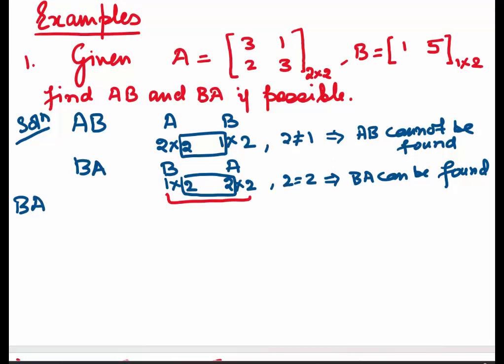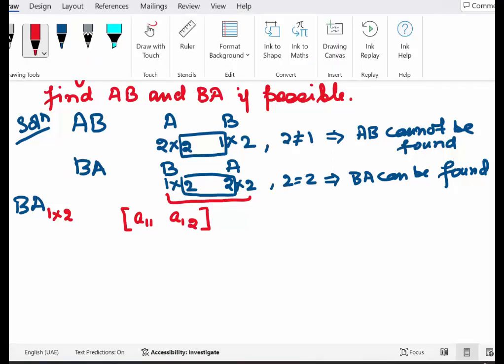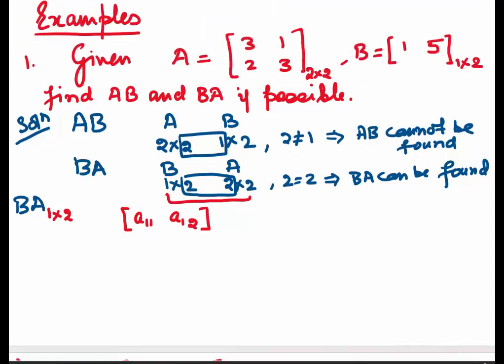As I had told earlier, the outside numbers give us the order. So BA will have order 1 by 2 — 1 row and 2 columns. A matrix with 1 row and 2 columns will have elements A₁₁ and A₁₂. So we need to find these 2 elements. Let's write out BA: B is [1, 5] and A is the 2 by 2 matrix [3, 1; 2, 3].